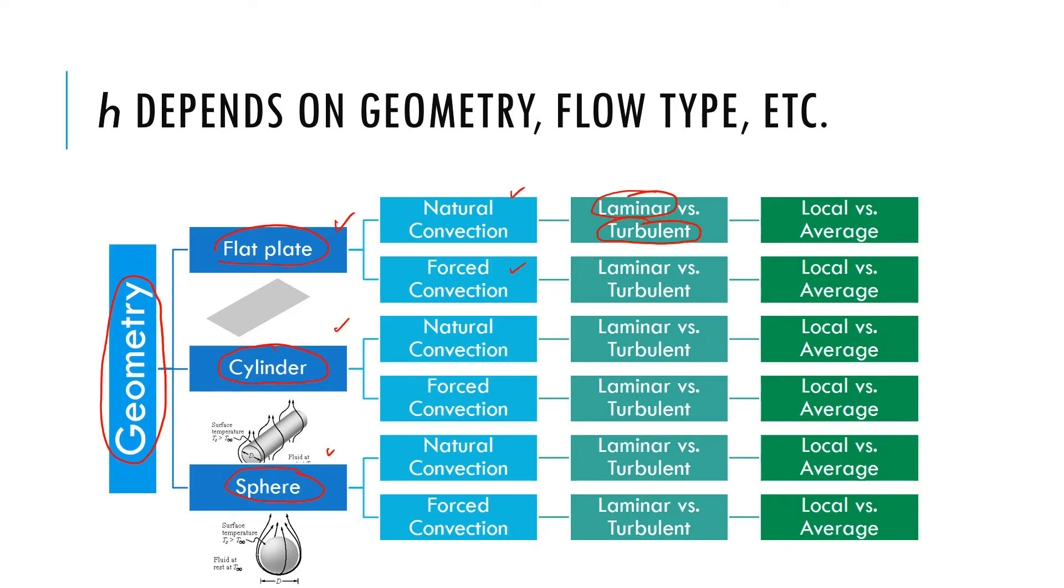Maybe we may not get to each one of them, but we need to be careful when finding a formula whether the flow is laminar or turbulent. And again, H varies with position as we already said, so there is a local H or an average H over the entire distance or surface. We need to be careful about those.